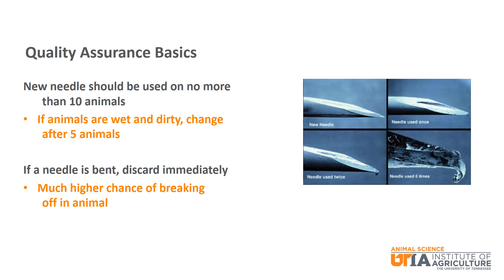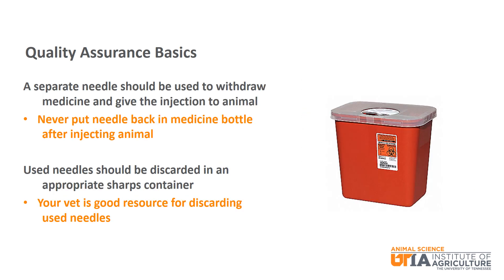We will finish up with some beef quality assurance basics. A new needle should be used after every 10 animals. This should be reduced to 5 animals if cattle are wet and dirty. If a needle is bent, it should be discarded immediately — never straighten it and use again, as this is extremely dangerous and it could break off in the animal. You can see in the microscopic view of needles in the picture how the end of the needle curls after multiple uses. If giving injections to multiple cattle at the same time, be sure to use a separate needle to withdraw the medicine from the bottle and give the injection to the animal. Never put a needle back into the bottle after using it to inject an animal.